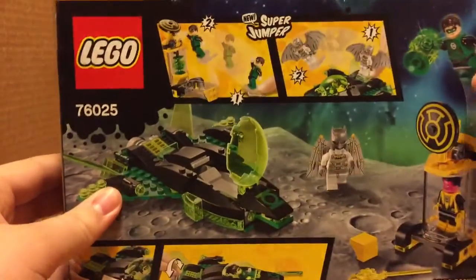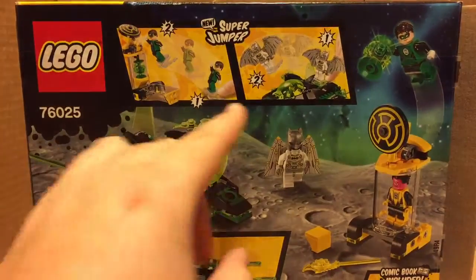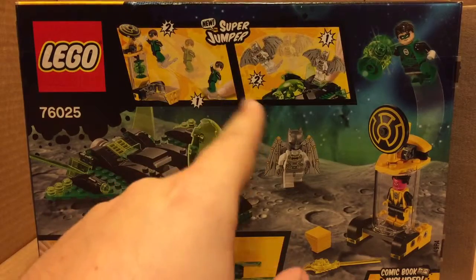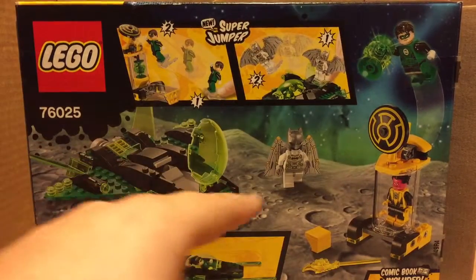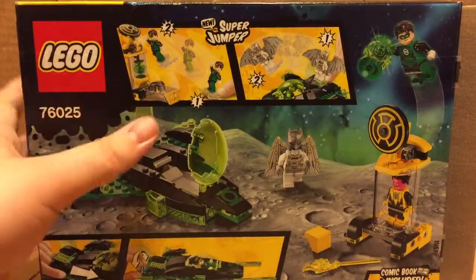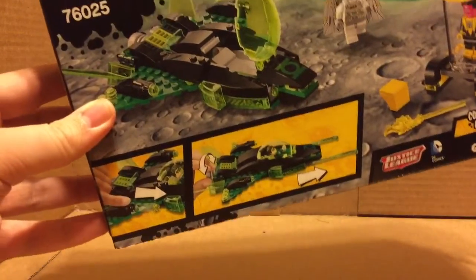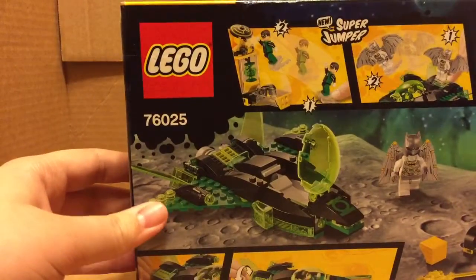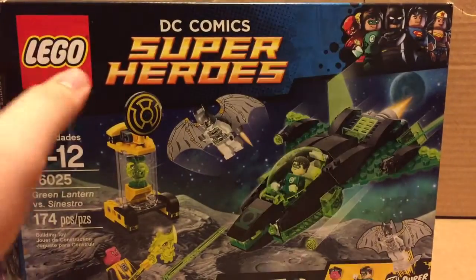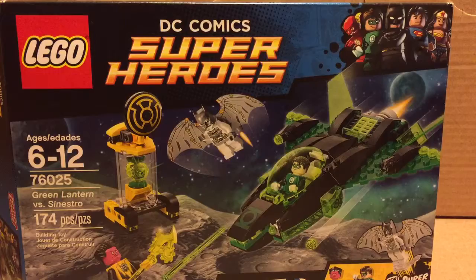On the back, you got your showing how to use the Super Jumper. You got your image of the builds. It shows you how to use parts from the build. And then we'll go into the contents of the box.